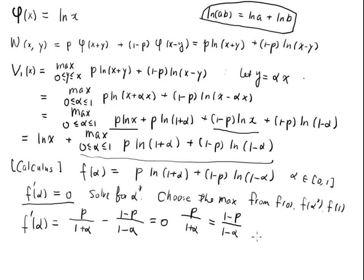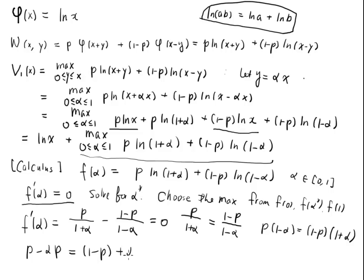Cross-multiplying gives p(1 - α) = (1 - p)(1 + α). Expanding: p - αp = 1 - p + α - αp. The αp terms cancel, and solving for α gives α* = 2p - 1. We will pause here and continue in part 2.